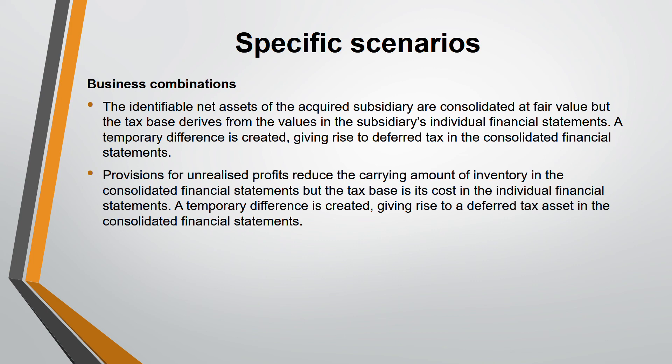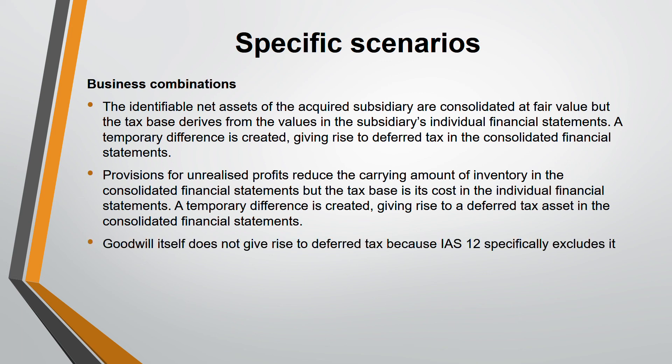To determine whether you have a deferred tax asset or liability, you must first identify which is greater — the tax base or the carrying amount. If the tax base is more, it's a deferred tax asset; if less, it's a deferred tax liability. Importantly, goodwill itself does not give rise to deferred tax — IAS 12 specifically excludes goodwill from deferred tax calculations, so when taking net assets, goodwill is excluded.